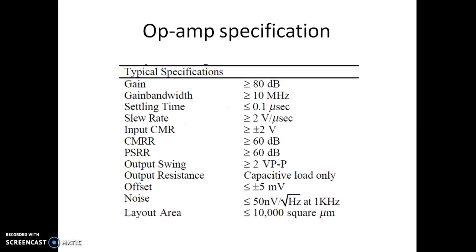The typical op-amp specifications include many parameters, not just gain. The gain should be greater than or equal to 80 dB. The gain bandwidth should be greater than or equal to 10 MHz. The settling time should be within 0.1 microseconds. The slew rate should be greater than or equal to 2 V per microsecond. The input common mode range should be plus or minus 2 V. The CMRR should be at least 60 dB, and the power supply rejection ratio should also be 60 dB.